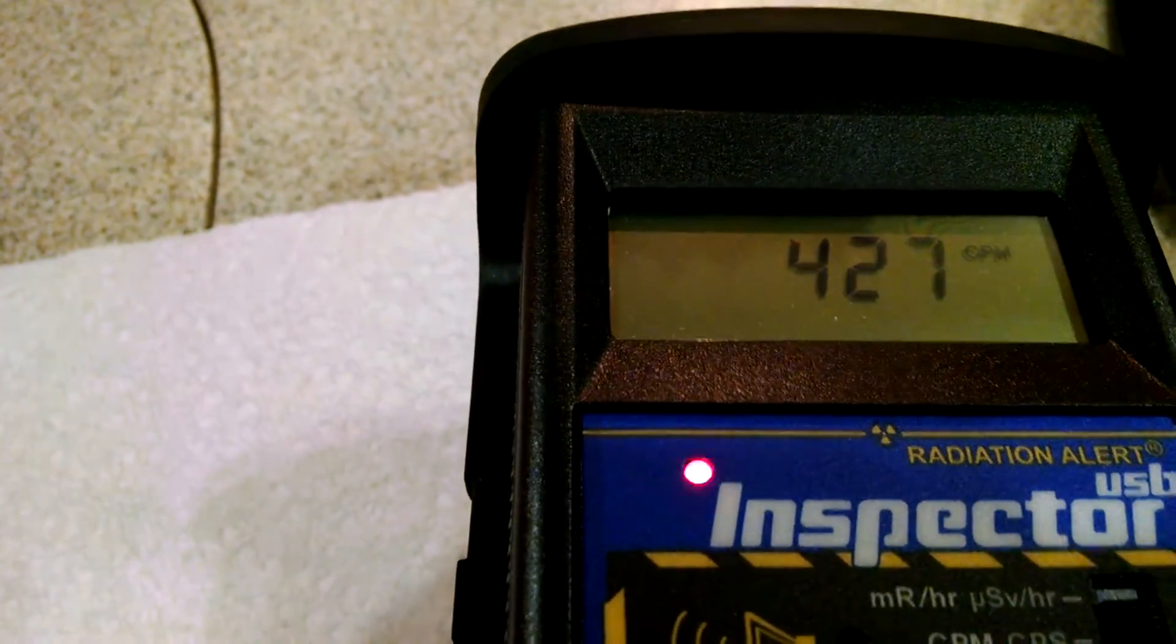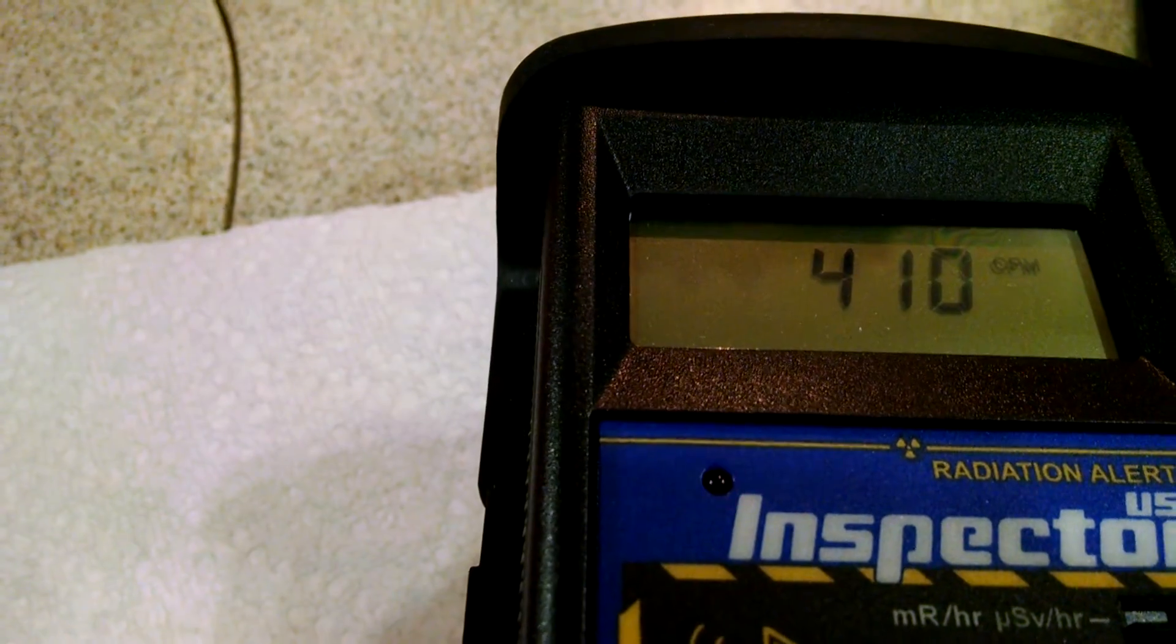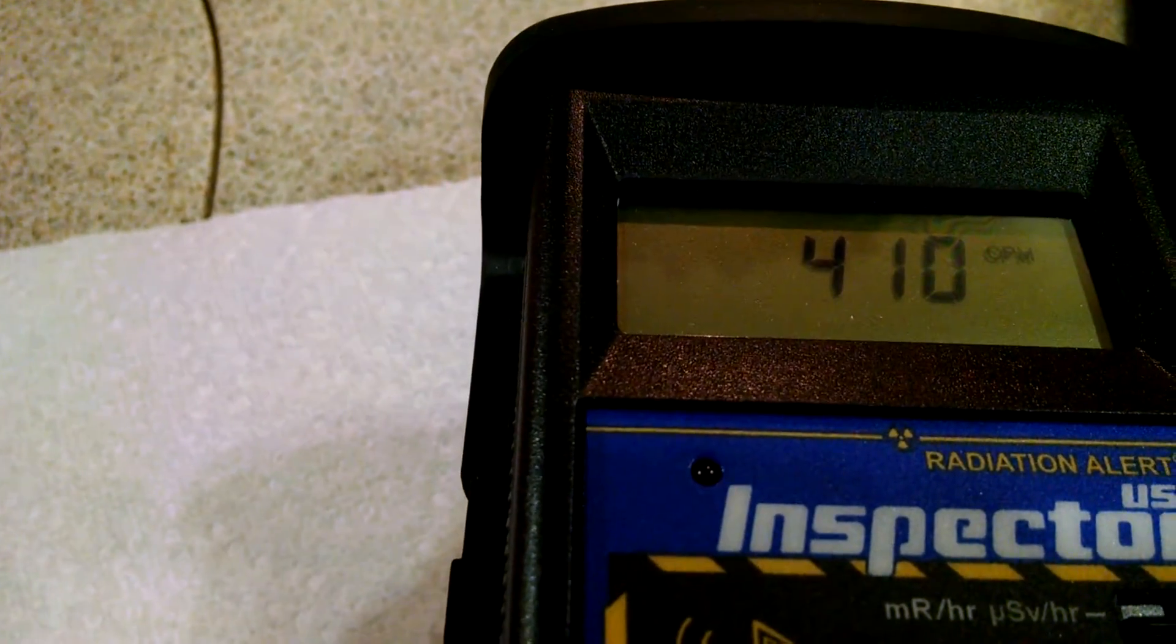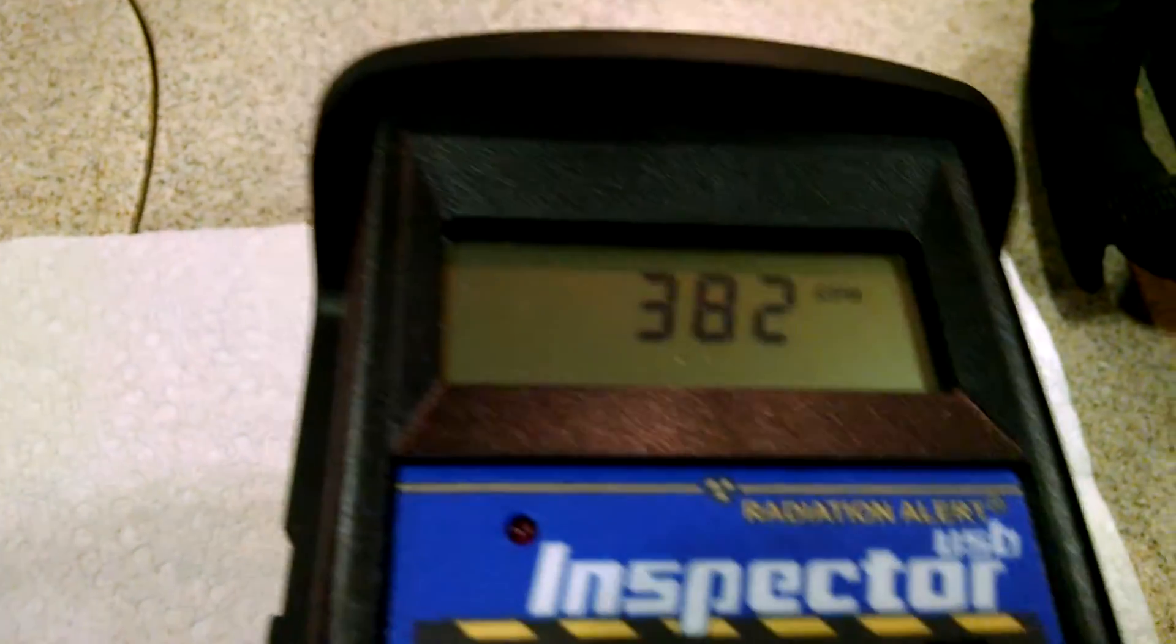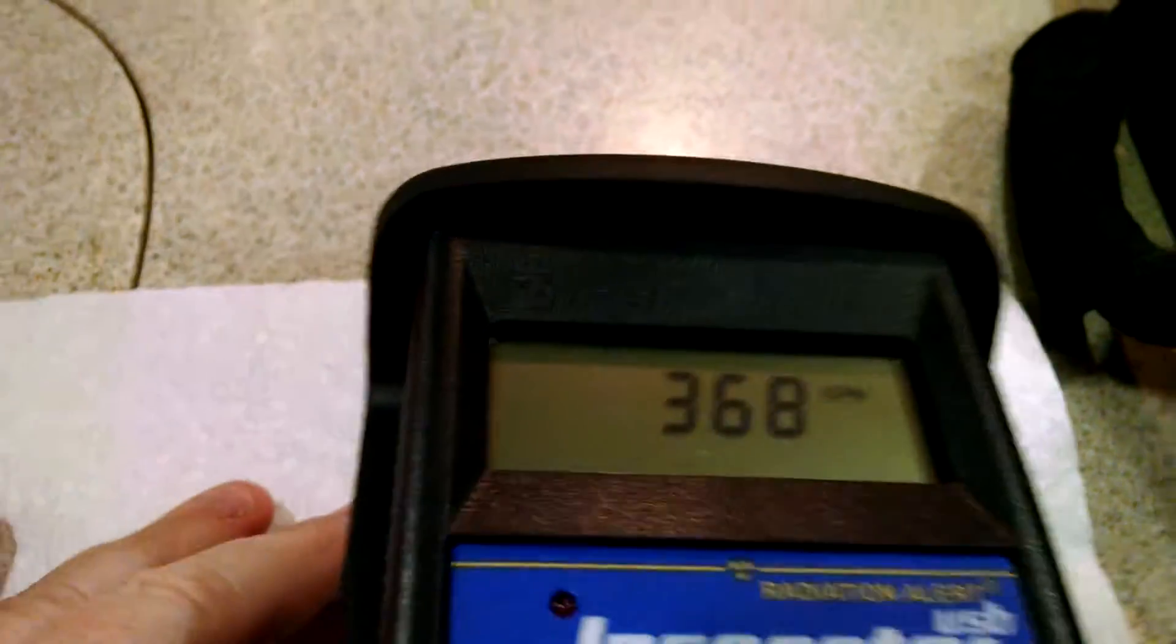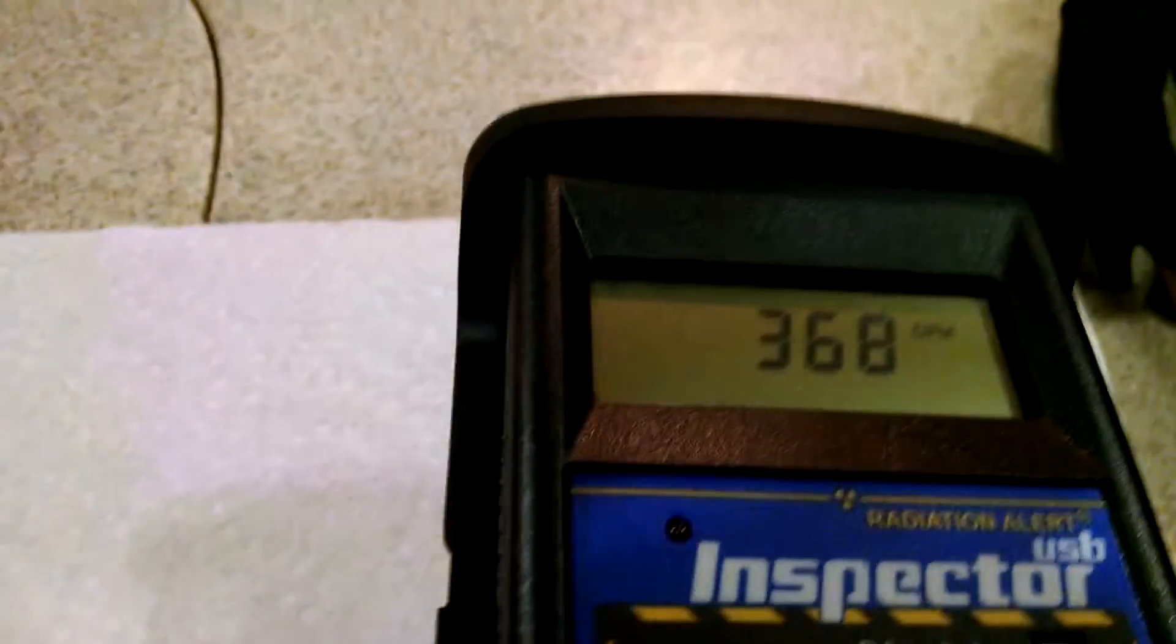Through the metallic can, so the beta and gamma radiation is sufficiently strong that it is still going to be able to go through the can.